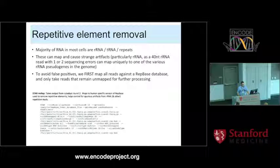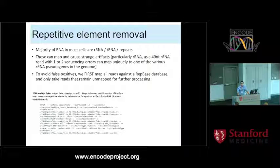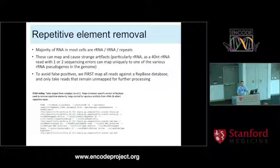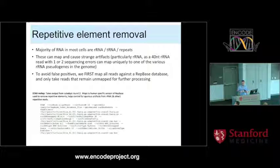The next step is repetitive element removal. Even for a really good CLIP dataset, probably 10 to 20% of reads are going to be ribosomal RNA - in many cases even higher. In an ideal world those would just map to the ribosomal RNA transcript, but in reality they wind up mapping to pseudogenes all over the place and create really good false positive signals. So to alleviate this, we first map to RepBase, remove all reads that map there, and only take the remaining ones through to genome mapping.